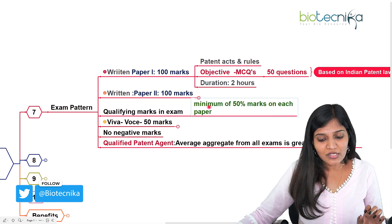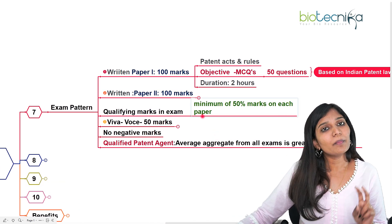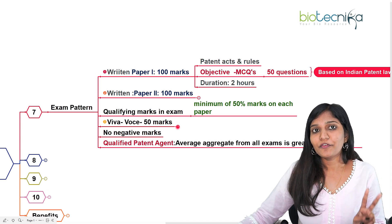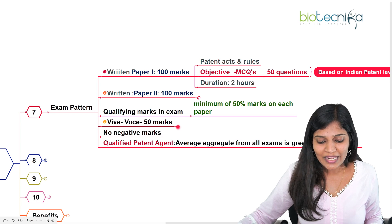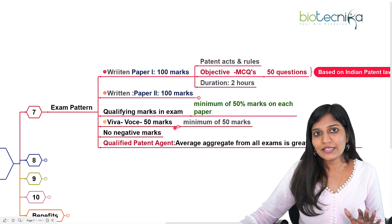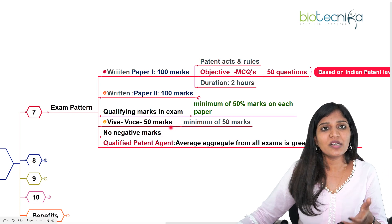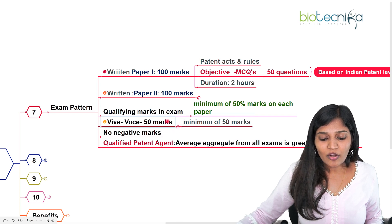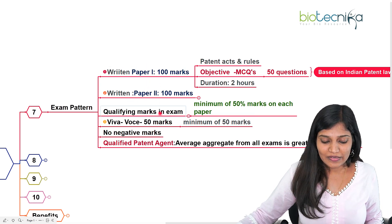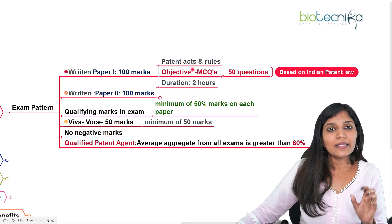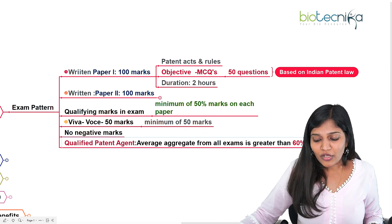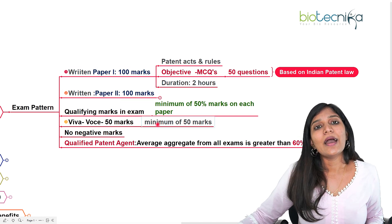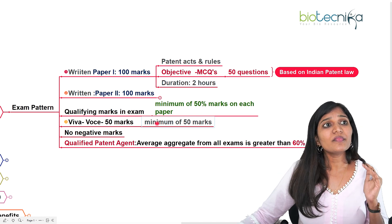In both papers, you need a minimum of 50% marks to qualify. After clearing Paper 1 and Paper 2 with at least 50% each, you will be called for a Viva Voce, which is a personal interview carrying 50 marks. Questions will be based on your personal background and the sections you have studied — there are about 160 sections. There is no negative marking for the written test. To become a patent agent, you need 50% in Paper 1, 50% in Paper 2, and an overall aggregate of more than 60% across Paper 1, Paper 2, and Viva Voce.